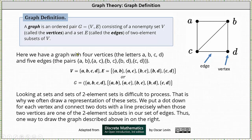On the right, we have a graph with four vertices, indicated by the letters A, B, C, and D, and five edges indicated by the two-element subsets of V: {A, B}, {A, C}, {B, C}, {B, D}, and {C, D}.